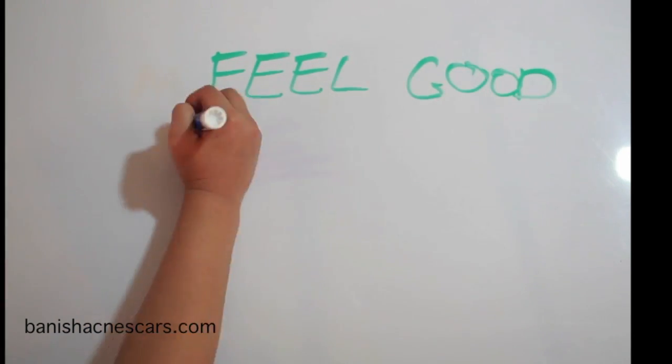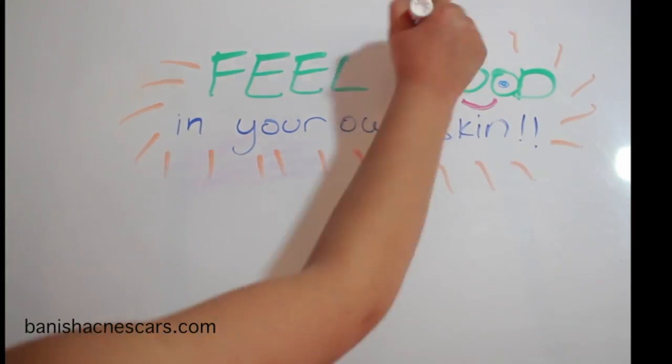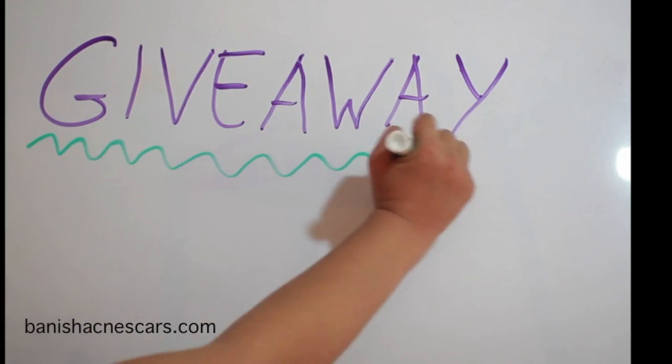This process is known as collagen induction therapy or CIT and helps the skin to produce its natural collagen. If you want to know how to get rid of stretch marks, then this is a natural and effective way of smoothing them over and reducing their appearance.